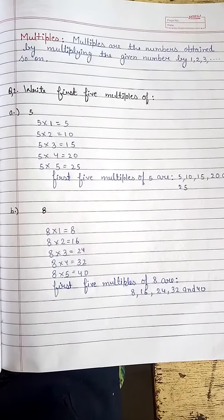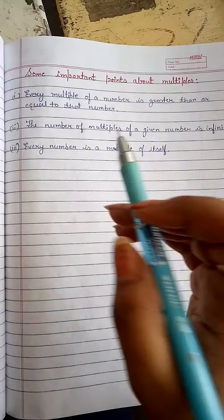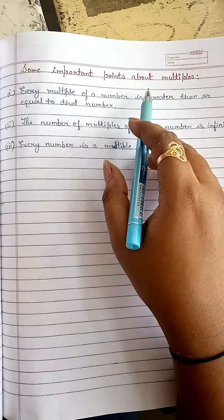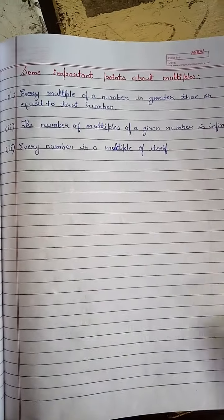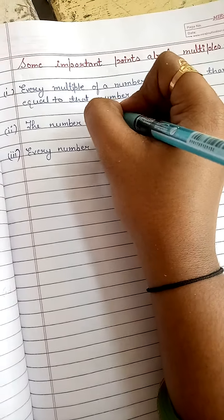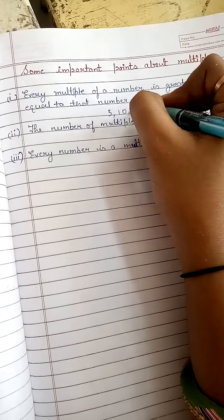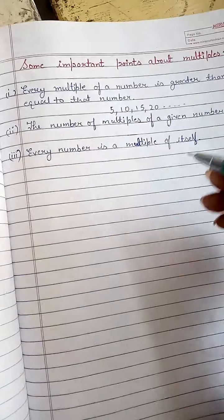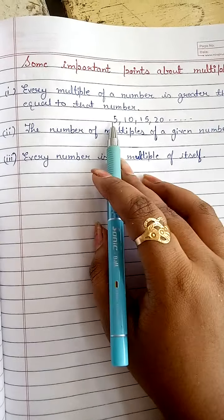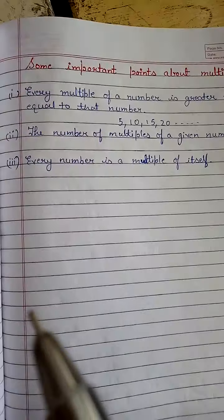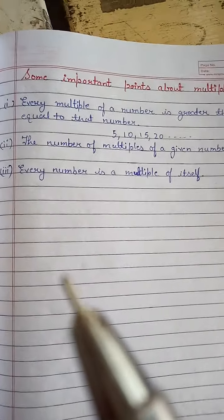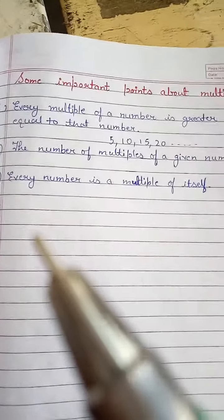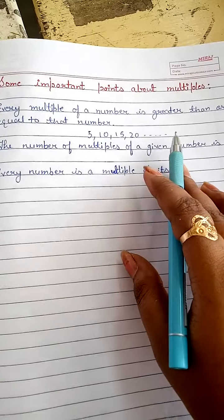Now let us discuss some important points about multiples. The first point is: every multiple of a number is greater than or equal to that number. For example, the multiples of five — five, ten, fifteen, twenty, and so on — are all either greater than five or equal to five.